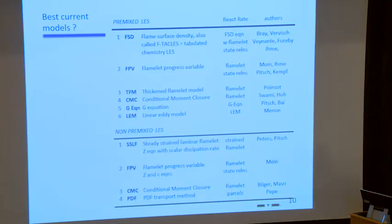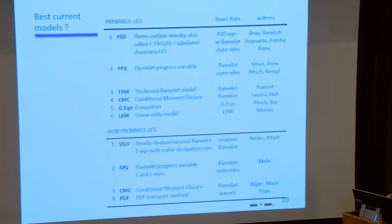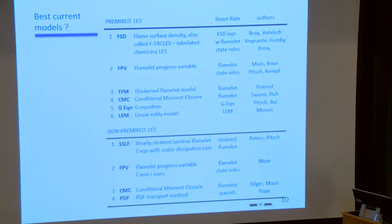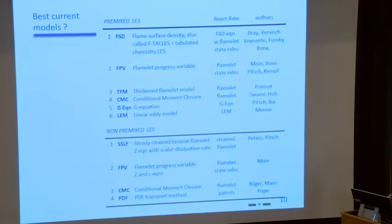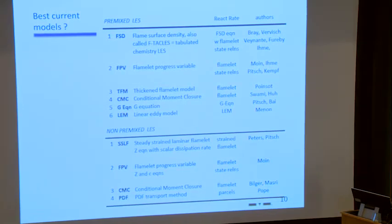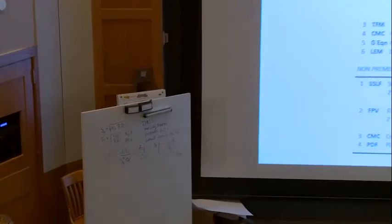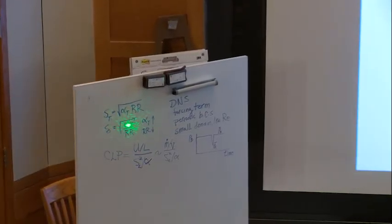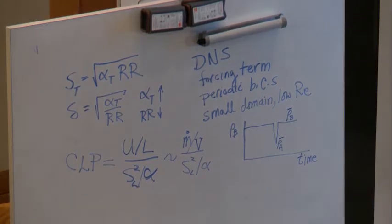And so his idea was, I wrote this down here on this board here, that we know that the turbulent burning velocity is related to the diffusivity, how fast heat can diffuse upstream times the reaction rate, divided, it's all under the square root. So if heat can, this is for premixed flame, the turbulent burning velocity depends on the diffusion of heat upstream and the reaction rate. But now he says that he also noticed that the thickness of a flame, and you can show this from theory, is equal to the square root of the diffusivity divided by the reaction rate.